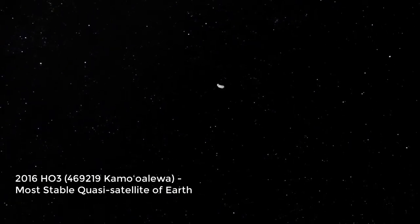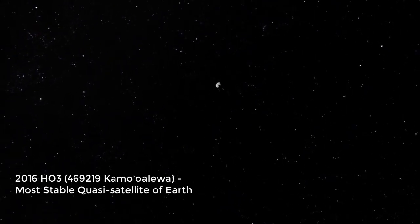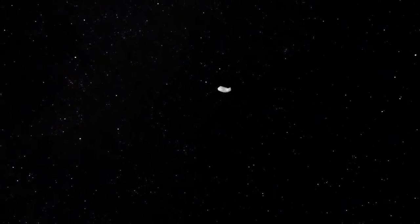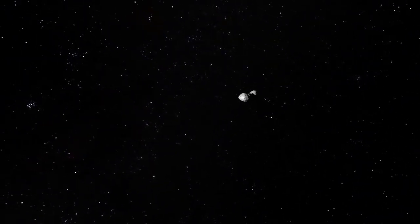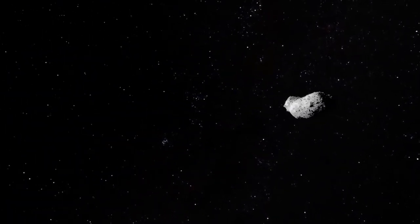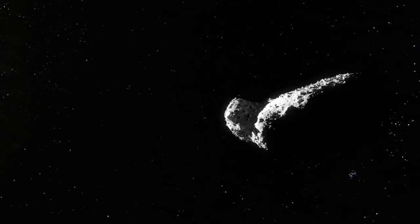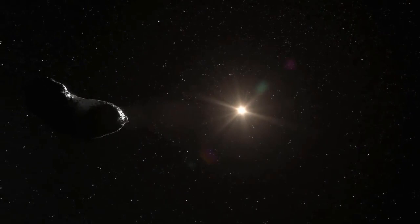2016 HO3 is a very small asteroid, fast rotator, and near-Earth object of the Apollo group, approximately 41 meters in diameter. It is currently the smallest, closest, and most stable quasi-satellite of Earth.